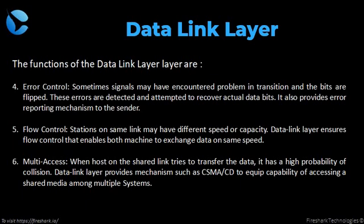Error control: sometimes signals may encounter problems in transition and bits are flipped. These errors are detected and the layer attempts to recover actual data bits, also providing an error reporting mechanism to the sender. Flow control: stations on the same link may have different speeds or capacities, and the data link layer ensures flow control so both machines can exchange data at the same speed. Multi-access: when hosts on a shared link try to transfer data, there is a high probability of collision. The data link layer provides mechanisms such as CSMA/CD to manage receiving and accessing a shared media among multiple systems.